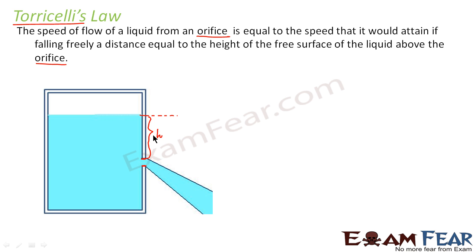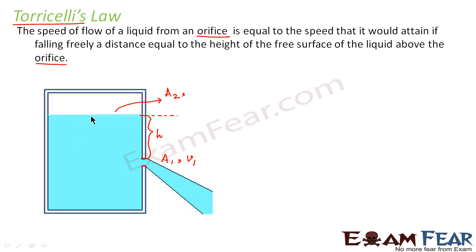Here we will try to prove the truth of this law. Let us suppose that the area of this slit is A1 — it is a very small slit, so A1 is also small — and the velocity with which the fluid is coming out is V1. Let us say the area of the free surface of the liquid is A2, and the velocity of the liquid at the free surface is V2.